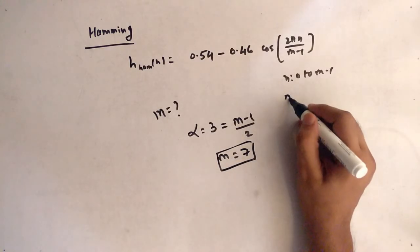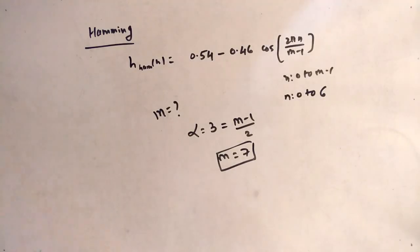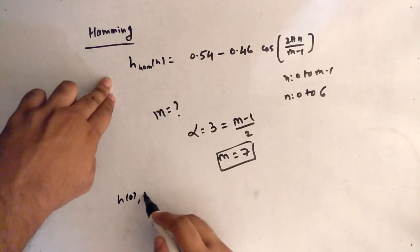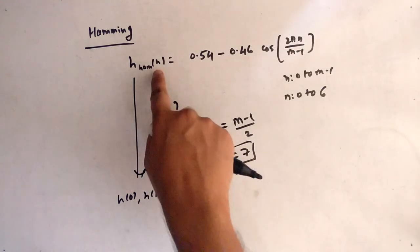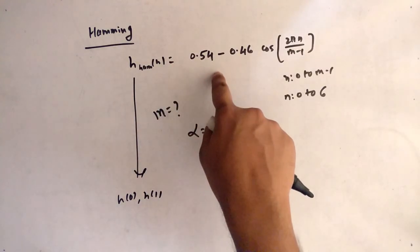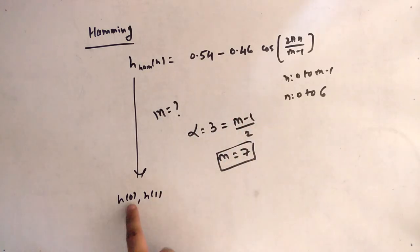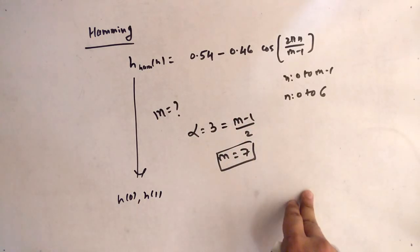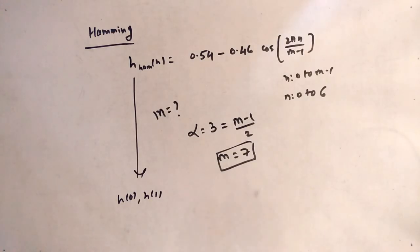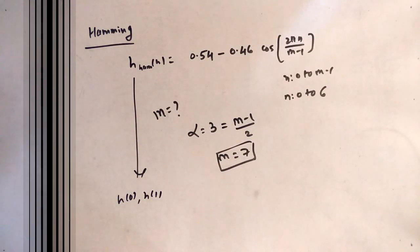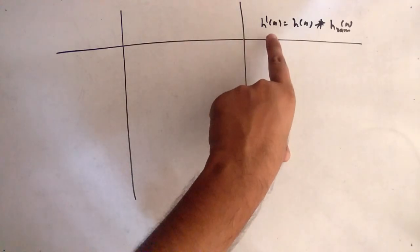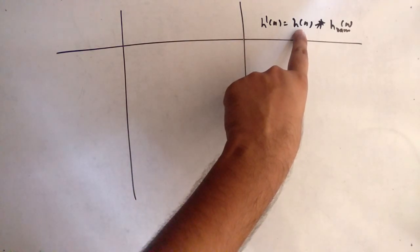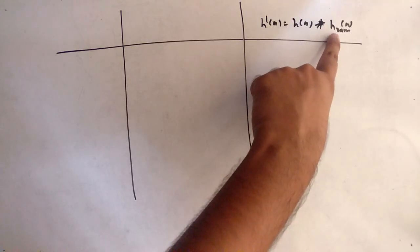So M = 7 and n ranges from 0 to 6. We need to find h(0) through h(6) for the Hamming window by substituting n = 0, 1, 2, 3, 4, 5, 6 into the formula. The final FIR answer is h'(n) = h(n) × h_ham(n).